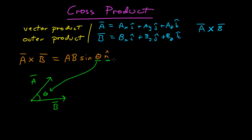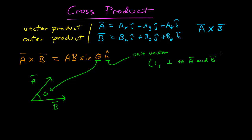That's important because you never know exactly what angle you're given when working a problem. The n-hat here is a unit vector, which means it has magnitude 1 and a direction. The direction is defined to be perpendicular to A and B and in the direction given by the right-hand rule.